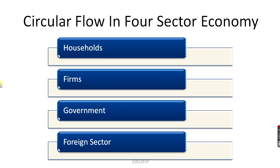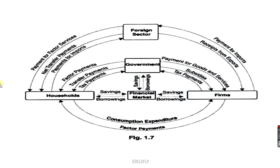Next is the circular flow of income in a four-sector economy. The four-sector economy includes four sectors: households, firms, government, and the foreign sector. In this diagram you can see the households, government, firms, and the foreign sector interacting with each other. As in the two-sector economy, the household supplies factor services to the firms and the firms supply goods and services to the household. The government supplies transfer payments, and tax payments are given to the government by households and firms. There are also subsidies paid by the government to firms and households, along with a capital market or financial market through which the government, households, and firms save and borrow.